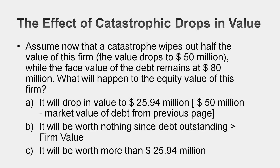Don't get too caught up in the mathematics. When you view equity as a call option, some very interesting implications emerge. Let's assume you wake up tomorrow to catastrophic news — half your business has disappeared. It was worth $100 million; now it's worth only $50 million. Your equity is going to drop in value, obviously. But think about how much it's going to drop. It used to be worth $75.94 million. You've lost $50 million of firm value, so you'd normally subtract $50 million from $75.94 million and get $25.94 million. But you might be missing something.